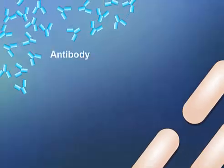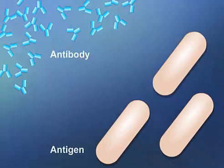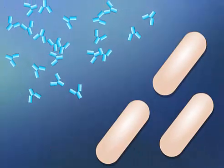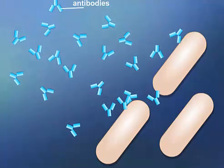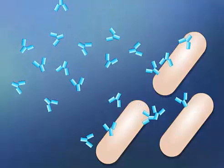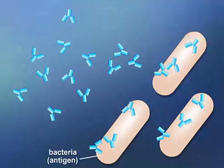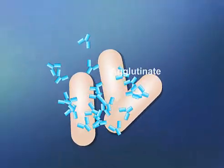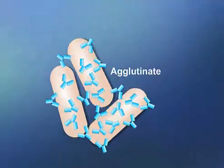A number of in vitro diagnostic tests are based on the specificity of interaction between antibodies and antigens. When soluble antibodies react with insoluble particles, such as bacteria, the antibodies link the bacterial cells together, forming an agglutinate.